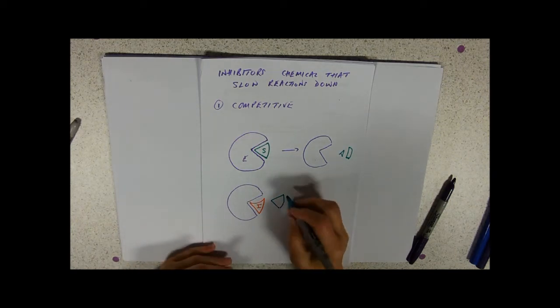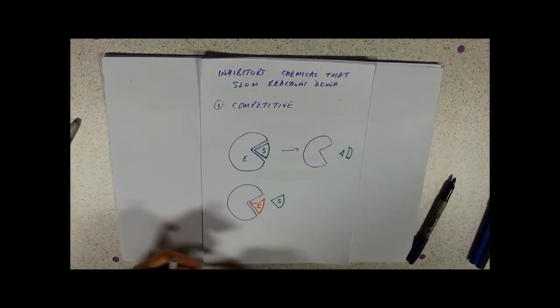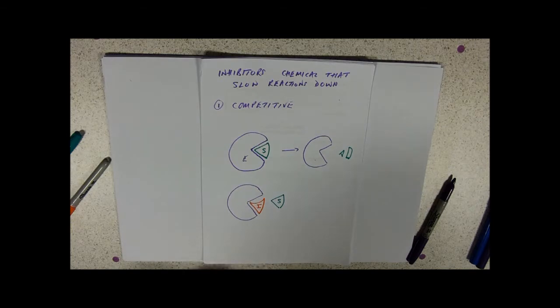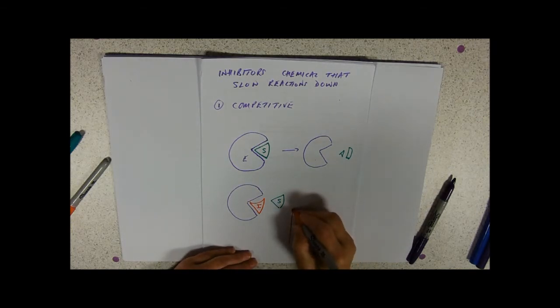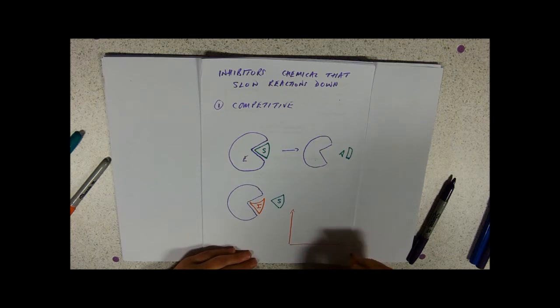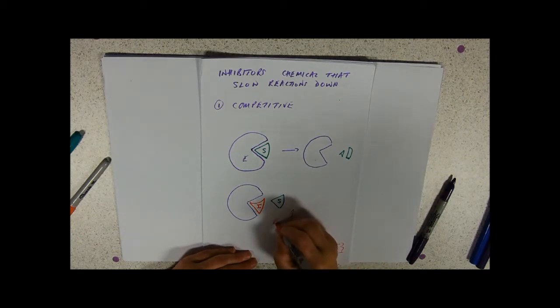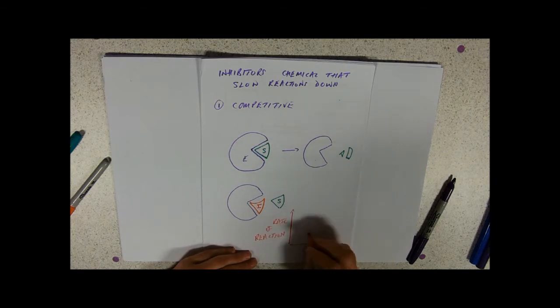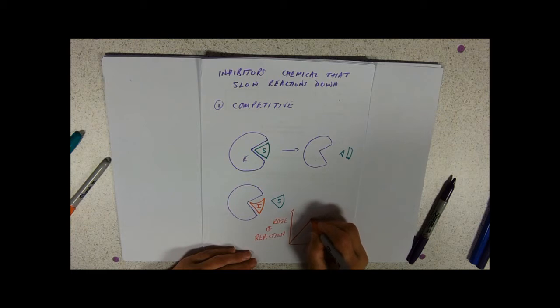So then we come into sort of ratios and how much inhibition you get. If we imagine our graph with substrate concentration and rate of reaction at the side. Normally what happens is as you increase substrate concentration, the likelihood of successful collisions goes up until all the active sites are full.